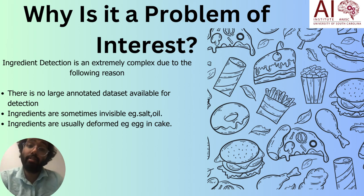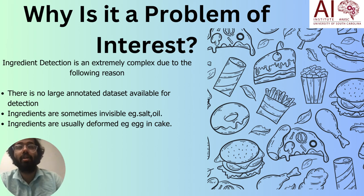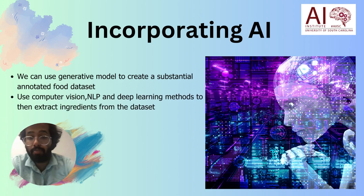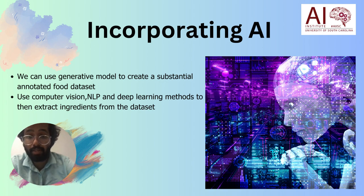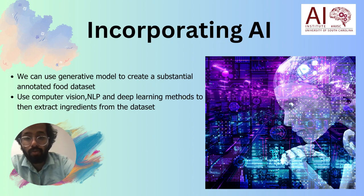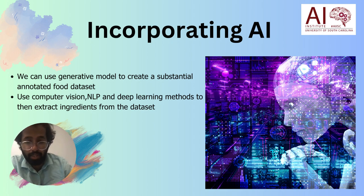There are many ingredients that are not visible in the image but play an important role, like salt, oil, etc. With the ever-increasing popularity of deep learning came generative models. We have seen the brilliance of models like stable diffusion, which produces photorealistic images. So why not use these models to create a large enough dataset for food image processing and subsequently use it for ingredient prediction?